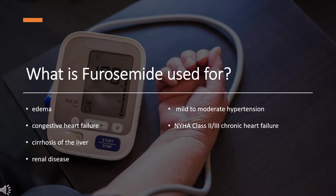What is furosemide used for? Furosemide is indicated for the treatment of edema associated with congestive heart failure, cirrhosis of the liver, and renal disease, including the nephrotic syndrome, in adults and pediatric patients. Oral furosemide is indicated alone for the management of mild to moderate hypertension, or severe hypertension in combination with other antihypertensive medications.